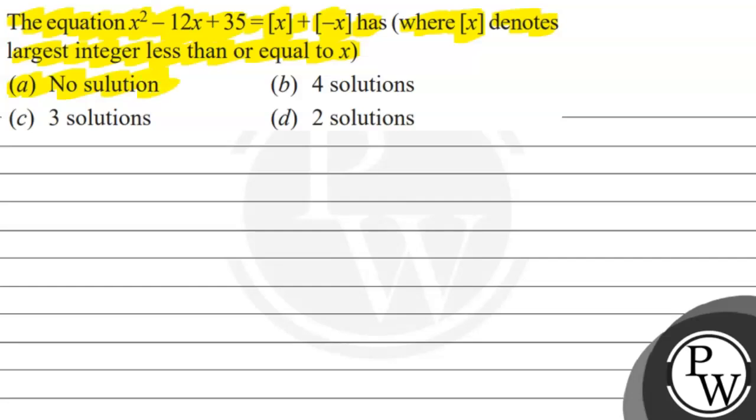Option A: no solution. Option B: 4 solutions. Option C: 3 solutions. Option D: 2 solutions.